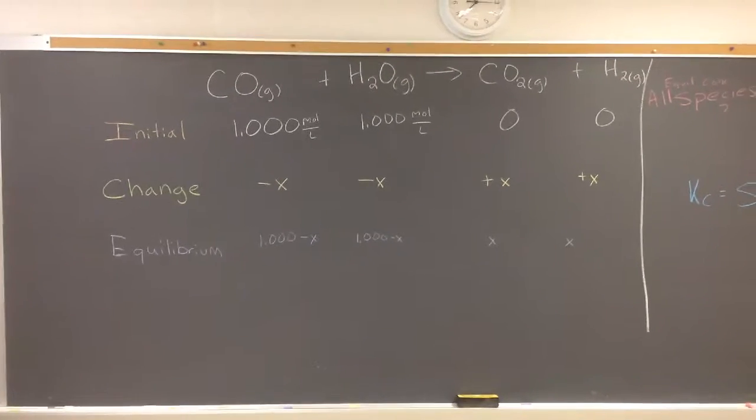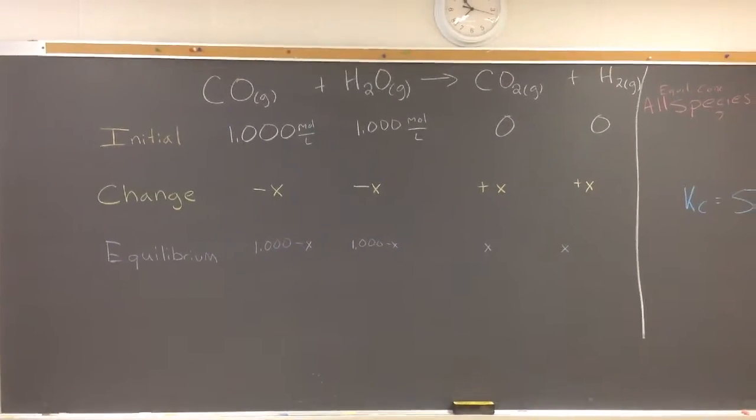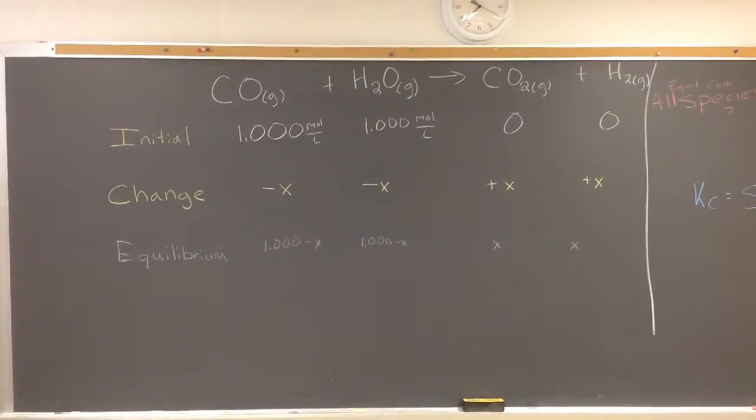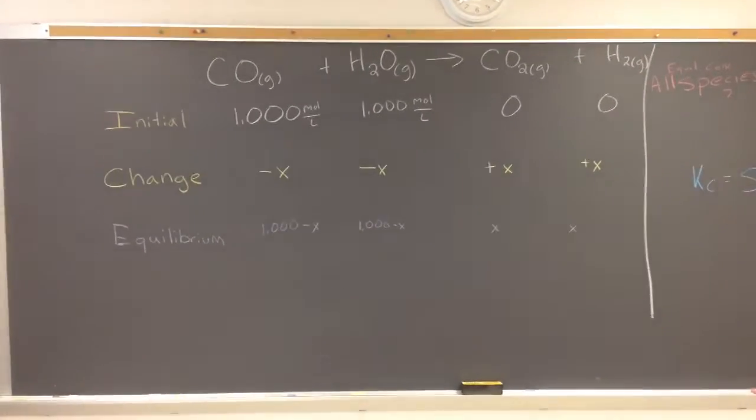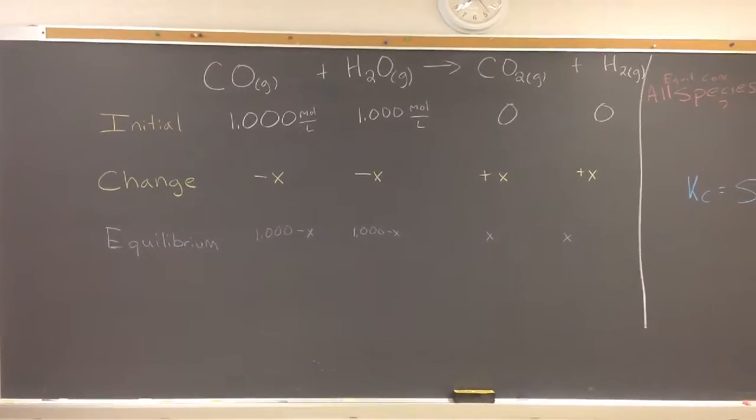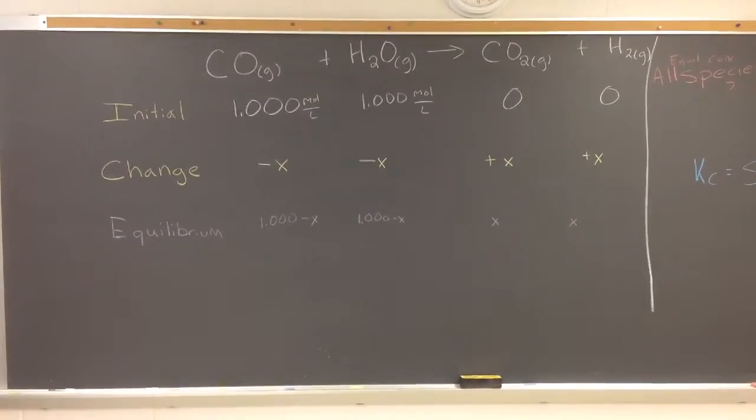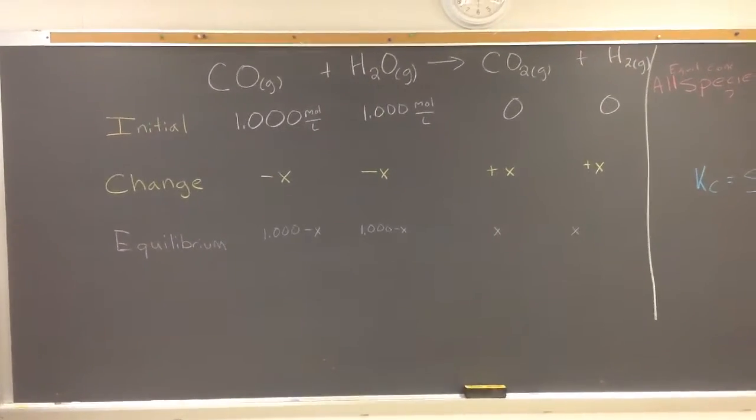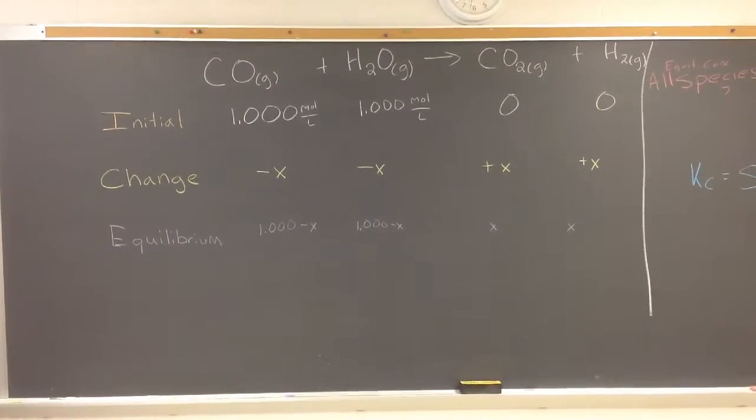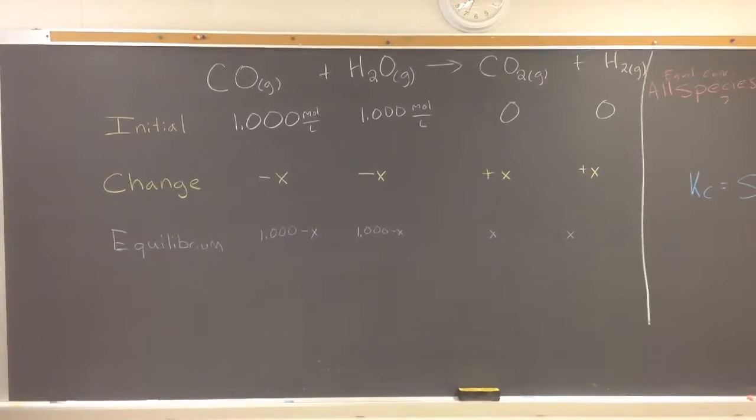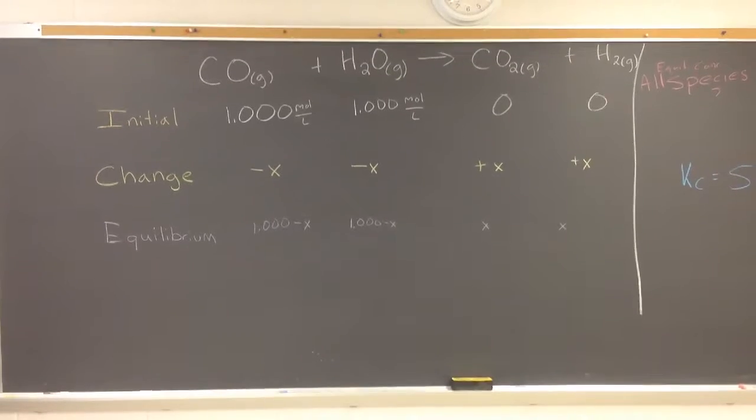It could be A, B, C, Y, doesn't matter, some algebraic term. So we've got minus X CO, minus X for the change in H2O, plus X for the change in CO2, and plus X for the change in H2. Now this is because of the stoichiometry, right? We have a one that would be in front of each of those reactants and products in this case.